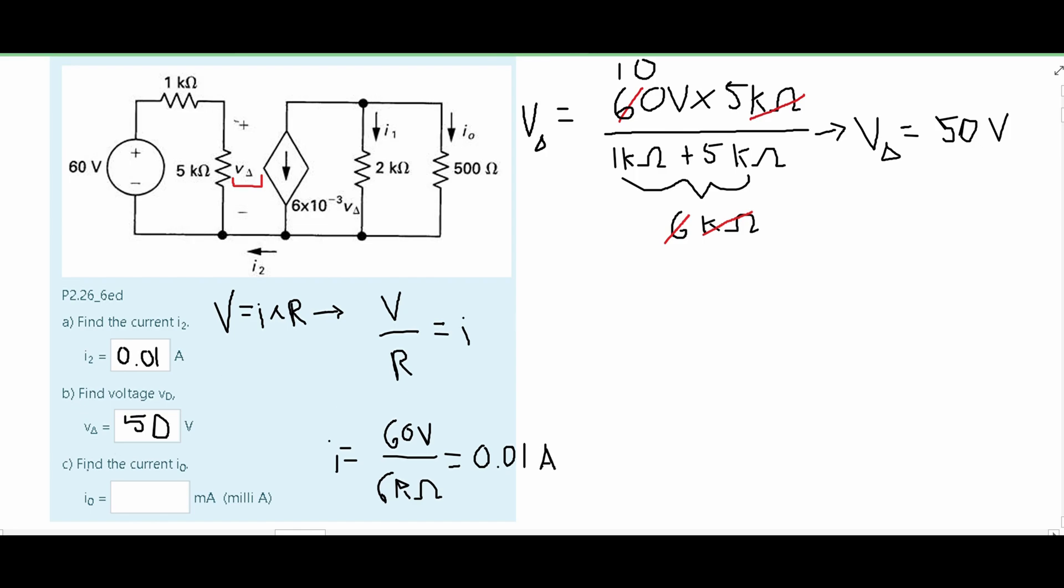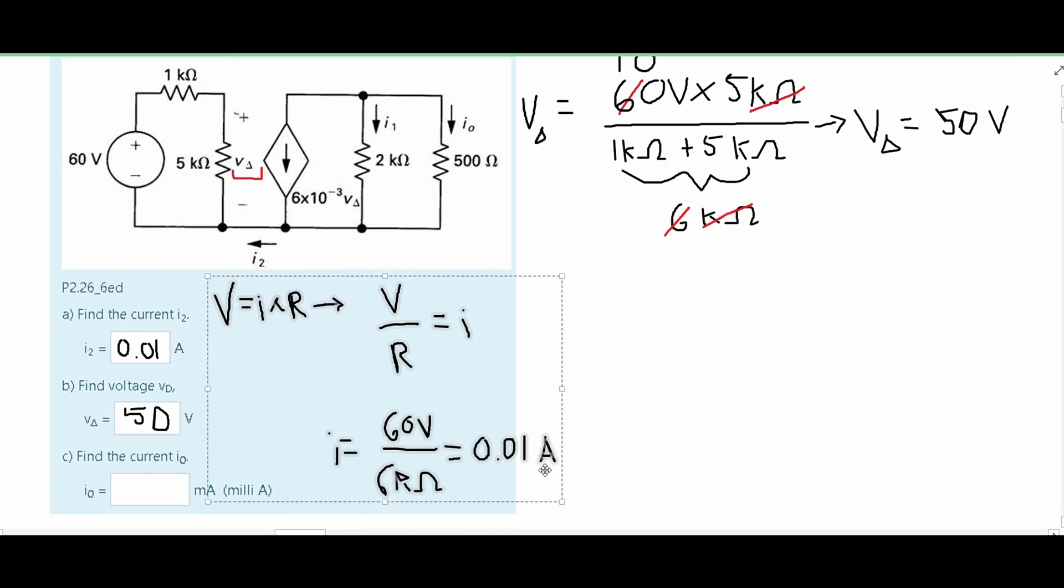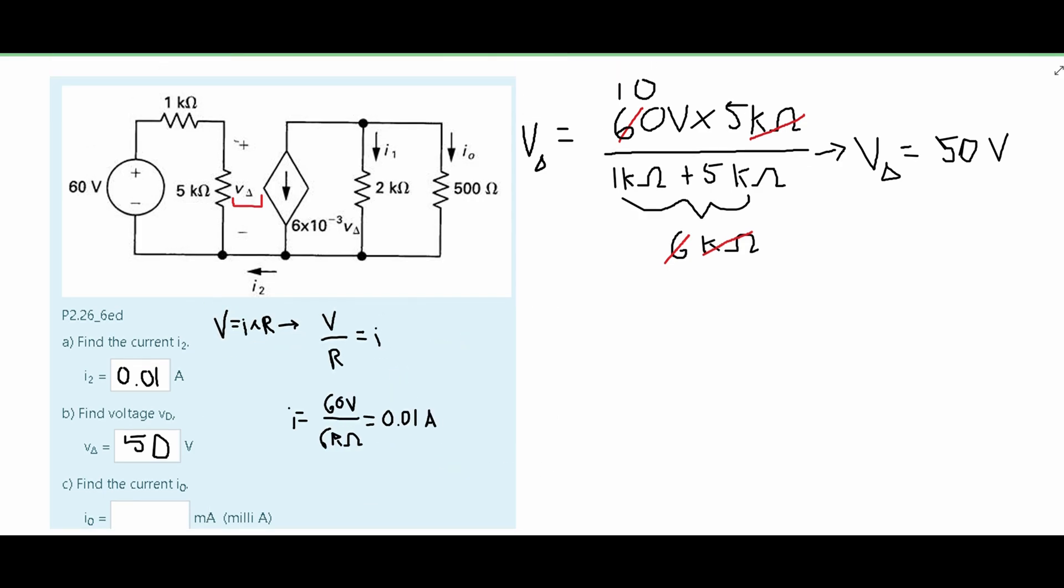Now we're going to find I0. To do this, we are going to look at the right side because that's where I0 is. We have these two resistors in parallel, and we also have this current right here. We're going to use something similar with this formula right here. We need to get the voltage and multiply it by the resistance, and then we will have our current. Since these two resistors are in parallel, we are going to have to combine them to actually do this.